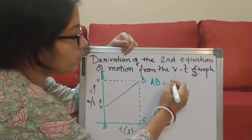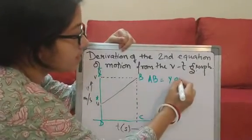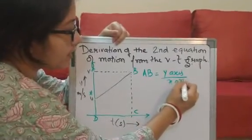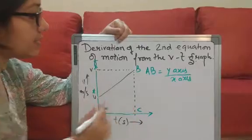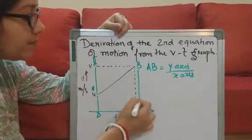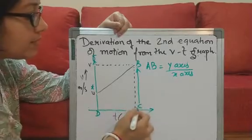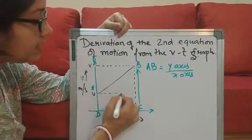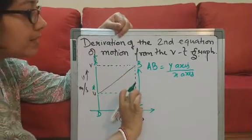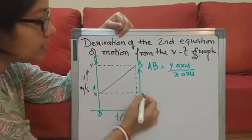What is the slope? Slope we know is y axis by x axis. Now, what is y axis? Y axis is this portion, right? So, how much is this? If I divide it from here, total is v minus u.